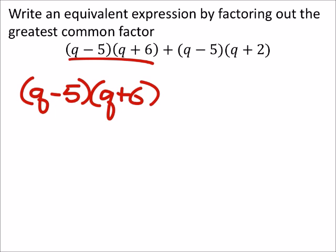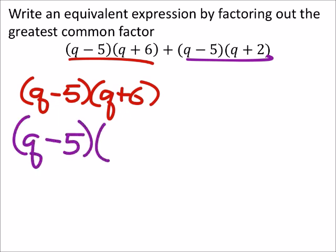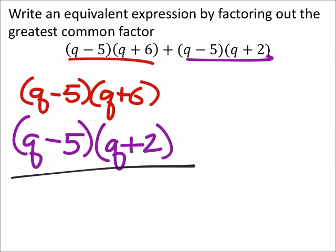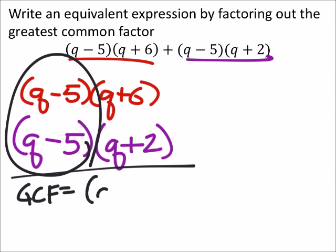That is the prime factorization with this. The next one also can't be factored any further, so I've got q minus five and q plus two. The greatest common factor between these two is q minus five.